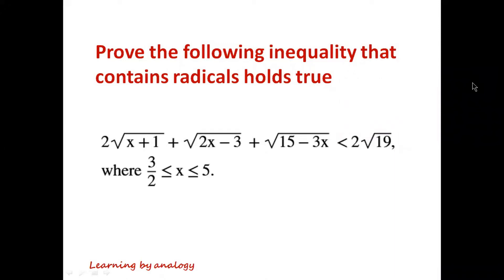The following inequality that contains radicals holds true: 2√(x+1) + √(2x−3) + √(15−3x) < 2√19, where 3/2 ≤ x ≤ 5.